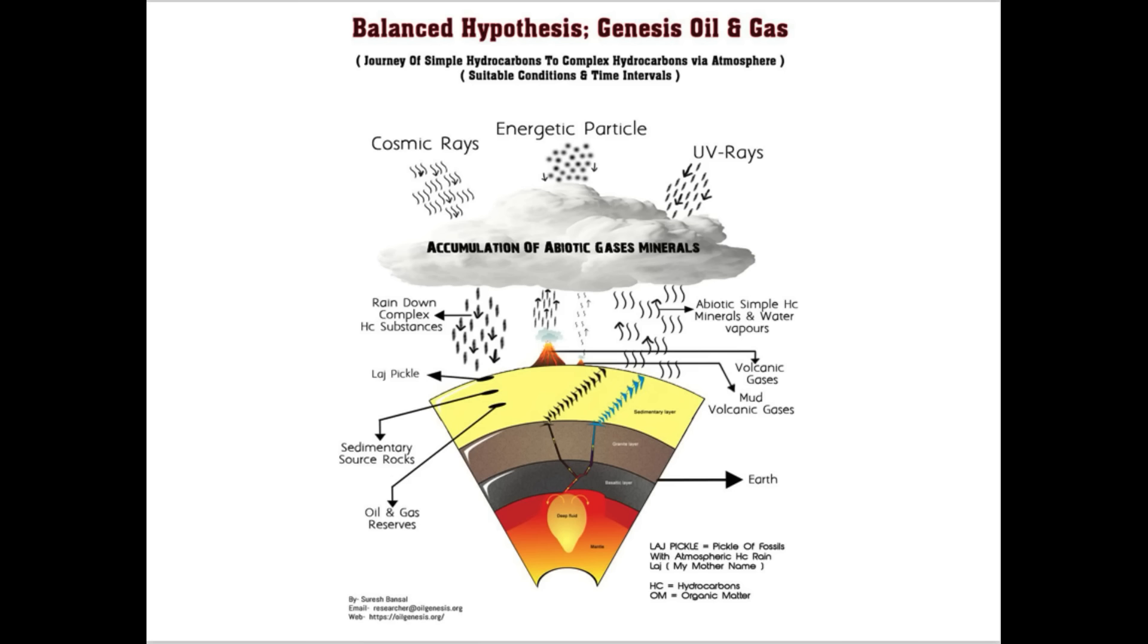Second theory is abiotic theory. Oil and gas originate from Earth's mantle. They are not derived from past biological sources. These two contrasting theories have sparked ongoing discussions, with each side presenting compelling arguments. The biotic theory emphasizes the role of organic matter, while the abiotic theory suggests a non-biological origin.